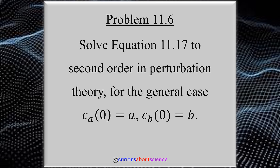From initial conditions to general solution, solving time-dependent perturbation theory equations. In this problem, 11.6, we're tasked with solving equation 11.17 to the second order in perturbation theory for the general case of CA at time equals 0 equals A, and CB at time equals 0 equals B. This is going to be a very long, tedious algebraic exercise, because typically one of these was 0, but now that we're in some combination of two states for a two-level system, solving this in the general case will be a lot of bookkeeping.